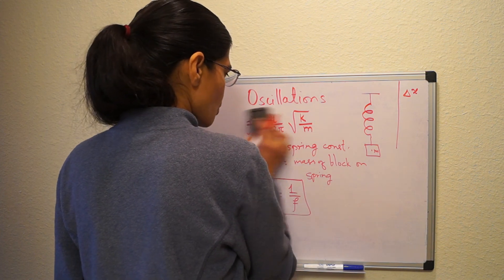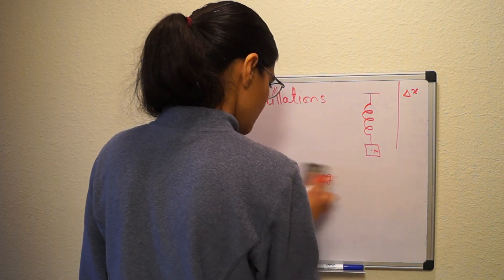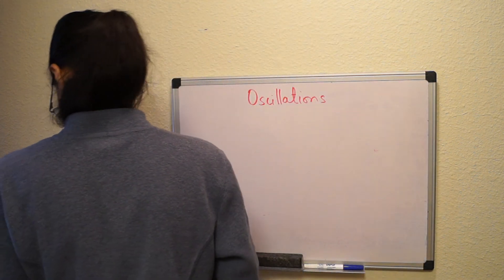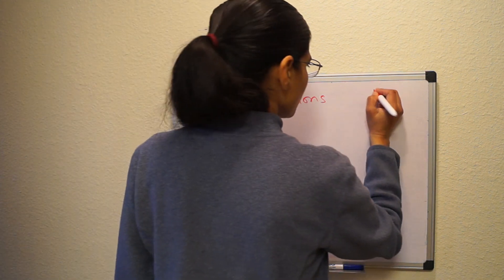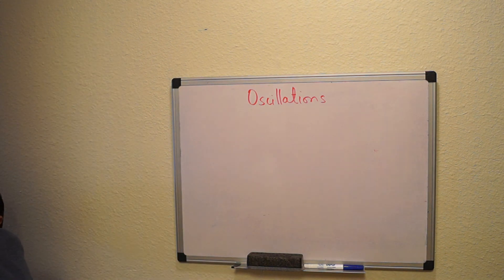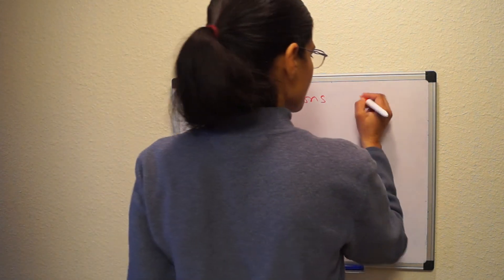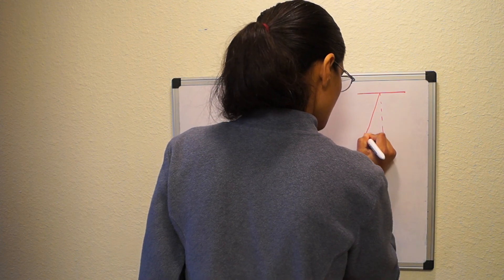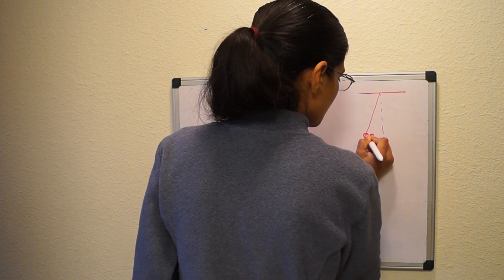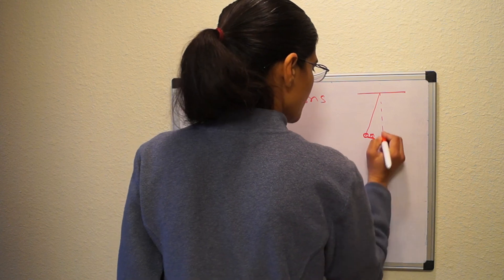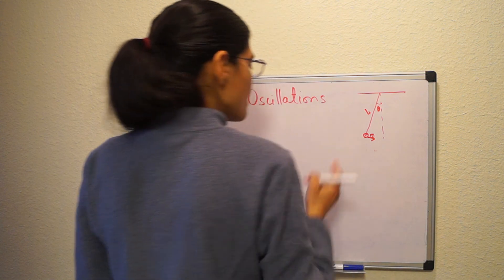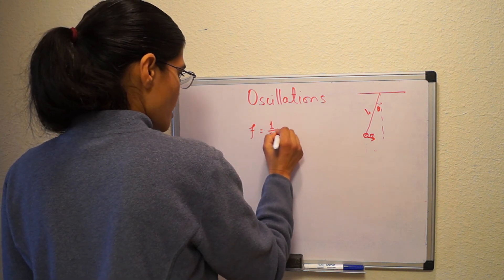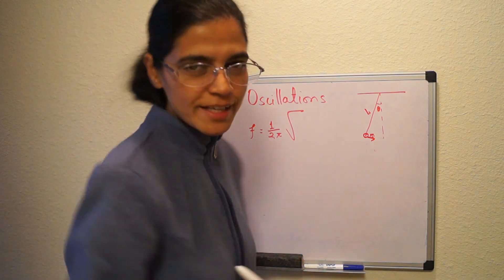We also learned about other systems exhibiting simple harmonic motion. One example was a pendulum: a mass hanging on a string of length L, displaced by angle theta, with a tangential force. We can find the frequency of this simple pendulum using f = (1/2π)√(g/L).